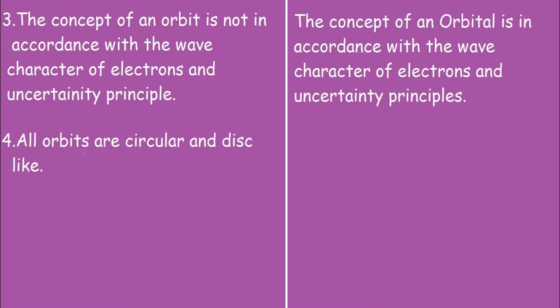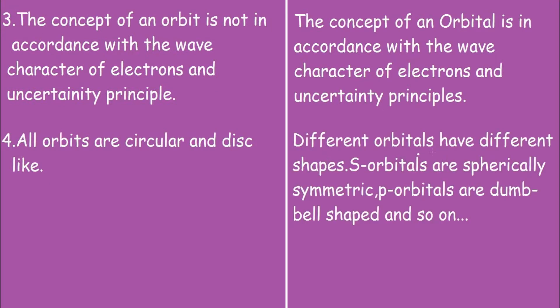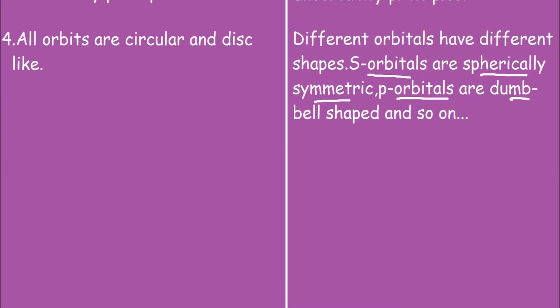So the fourth point under orbit is, all orbits are circular and disc-like. And for orbital, different orbitals have different shapes. S orbitals are spherically symmetric, p orbitals are dumbbell shaped, and so on. Now let's move on to the fifth point.